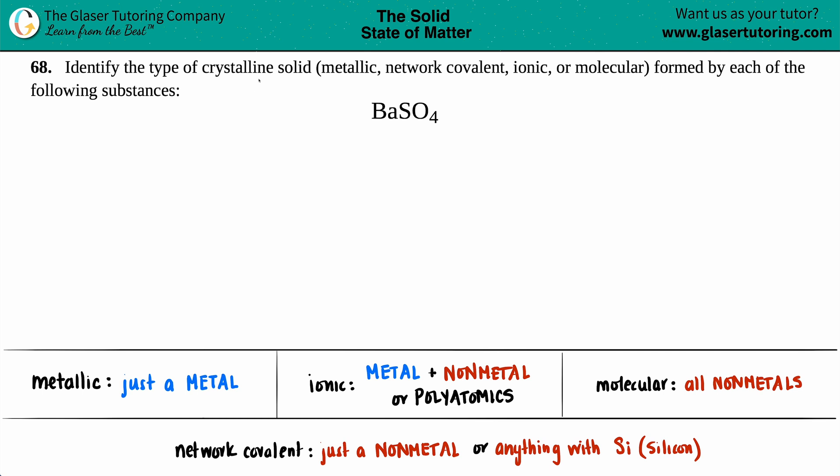Number 68: Identify the type of crystalline solid, whether it's metallic, network covalent, ionic, or molecular, formed by each of the following substances. In this case we have barium sulfate, BaSO4. What crystalline solid would this make? Just know that there's four different types, and I wrote down a little cheat sheet trick guide to help you guys out.